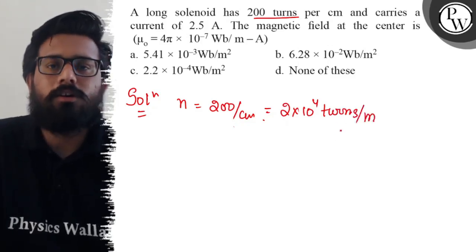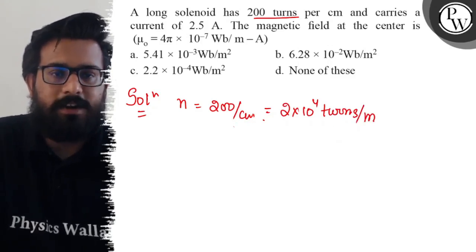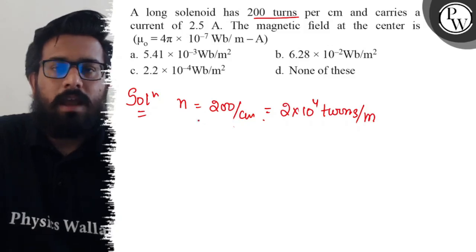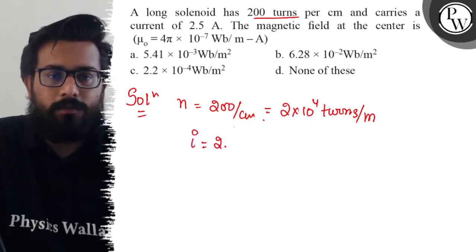Turns per centimeter to turns per meter: 1 centimeter equals 1/100 meter. So it comes out with 2 × 10^4 turns per meter. And the current is 2.5 ampere.